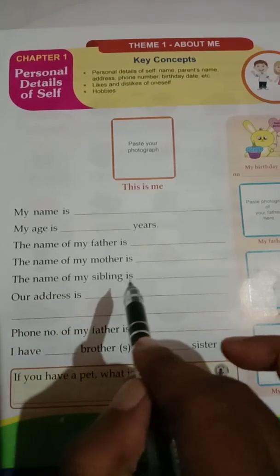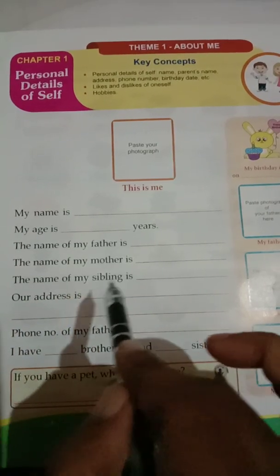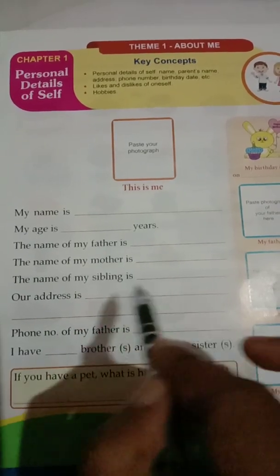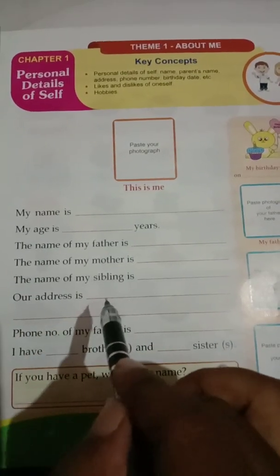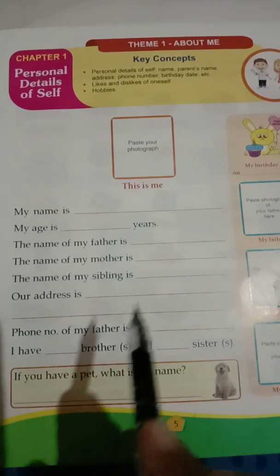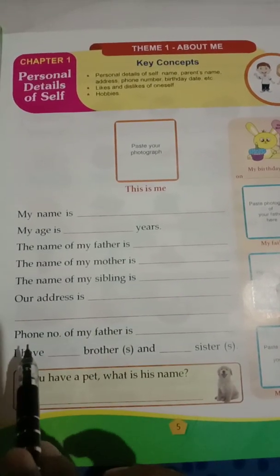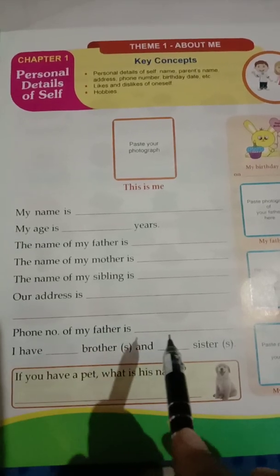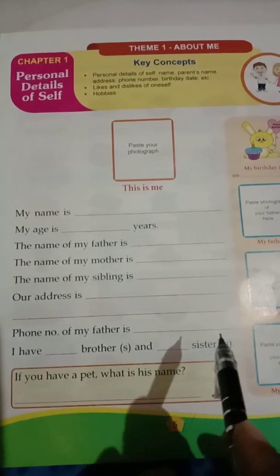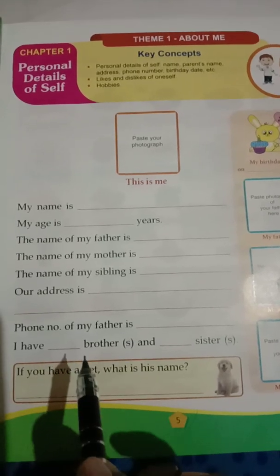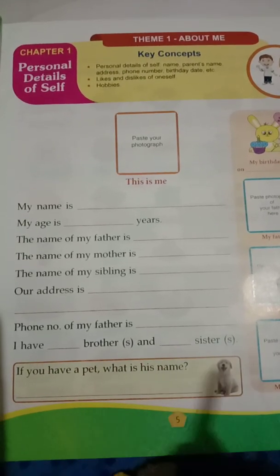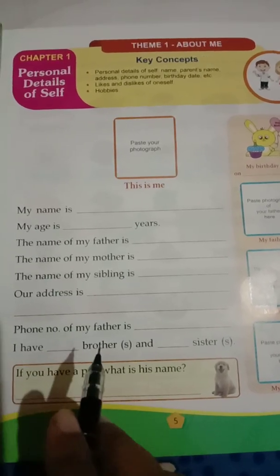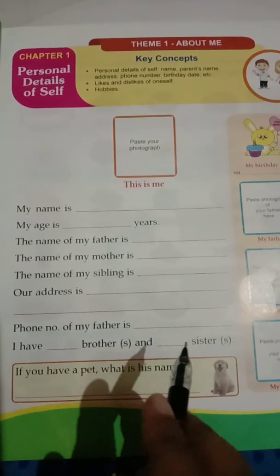The name of my sibling is... — sibling means your brother or sister. You have to write your brother or sister's name here. Our address is... — you have to write your address here, where do you live. Phone number of my father is... — you have to write your father's phone number here. I have how many brothers and how many sisters — you have to write that here.